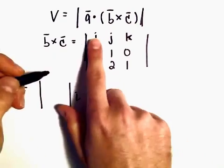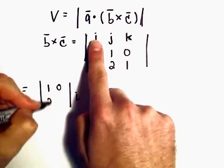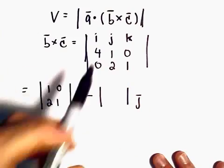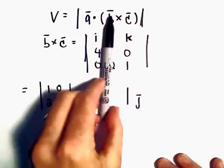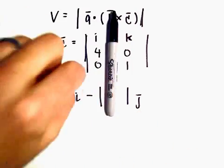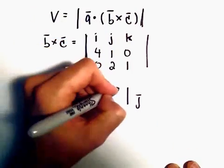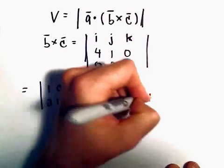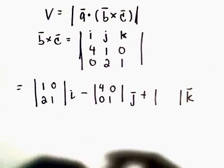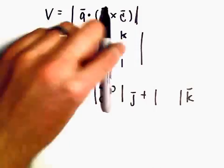When we cover up the i column, we have 1, 0, 2, 1 minus the j component, or the term involving j. So when we cover up j, we've got 4, 0, 0, 1. And then the stuff that goes with the k component, we'll have 4, 1, 0, 2.